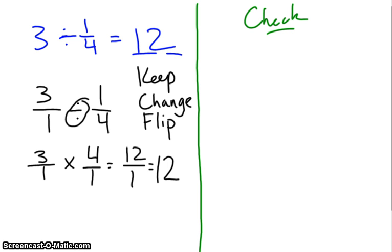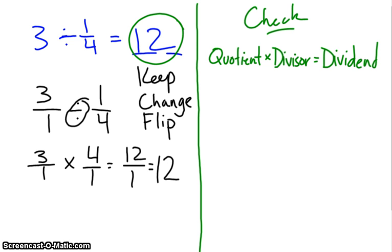And any time you want to check a division equation, you're simply going to multiply the quotient by the divisor. And if everything's correct, that should give you the dividend. So, I look for my quotient. It's a 12. And I'm going to multiply that by my divisor, which is 1 fourth. All right. And hopefully, that's going to give us 3, which is my dividend.